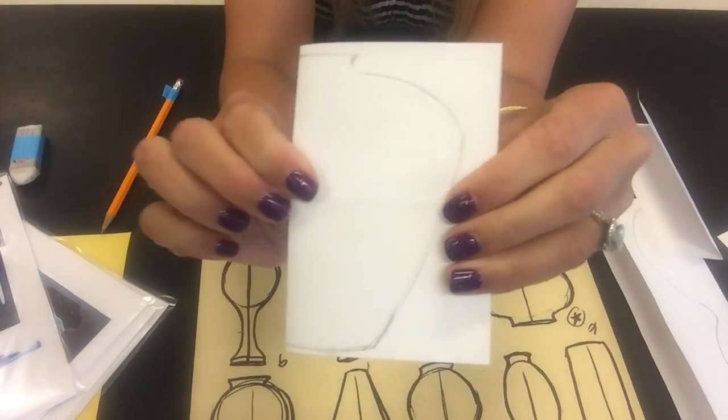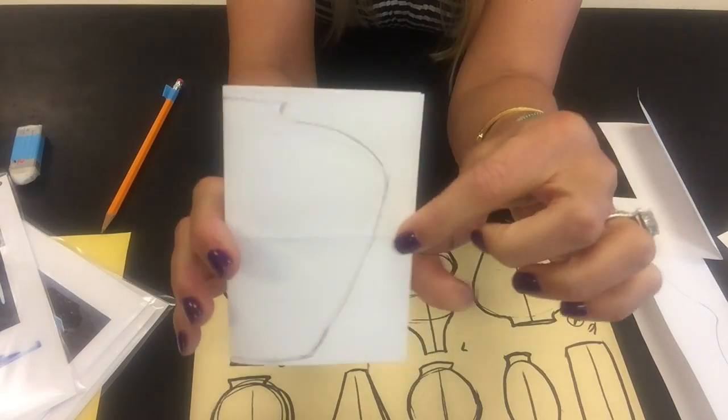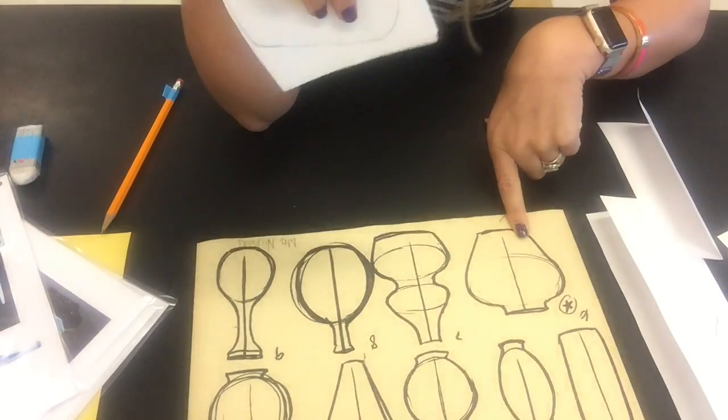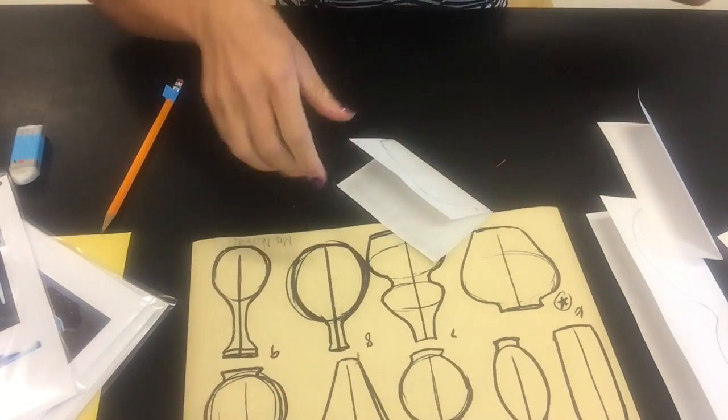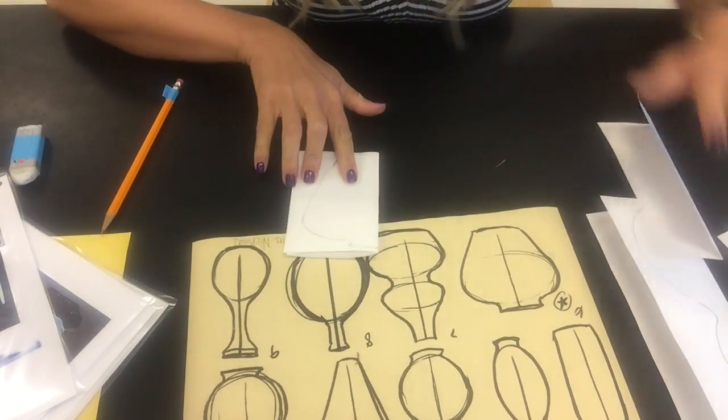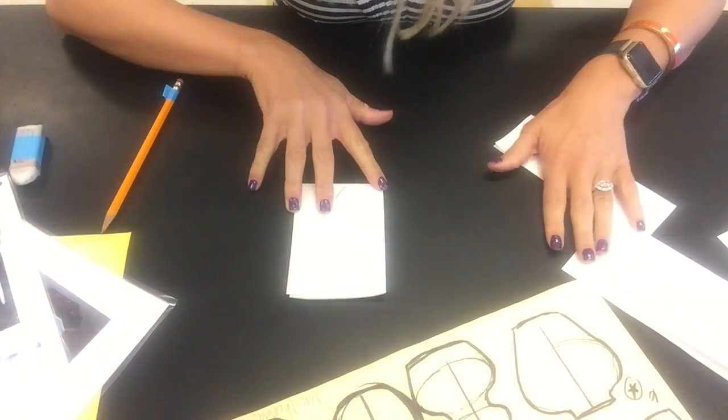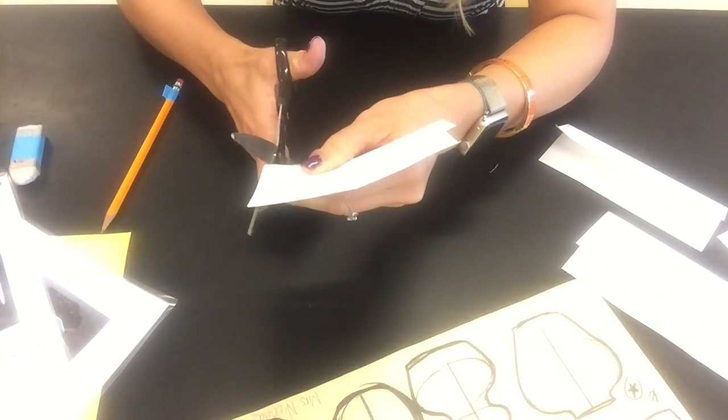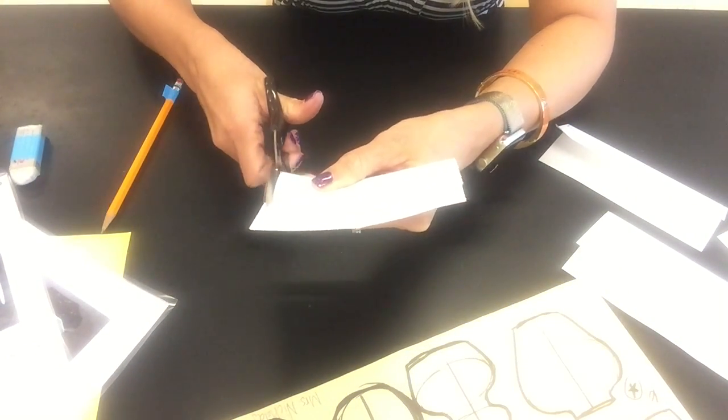All right, last second I changed my mind on this one. I wanted to make this one wider than I did tall, just kind of considering my design here. So now I have all three done. The next step is to cut them out, so I'm going to keep them folded while I do that and follow along my sketch line. Take your time cutting.